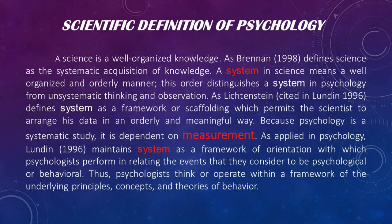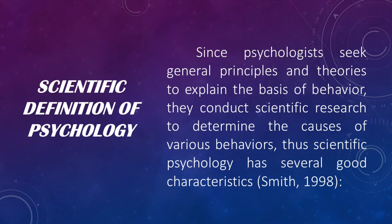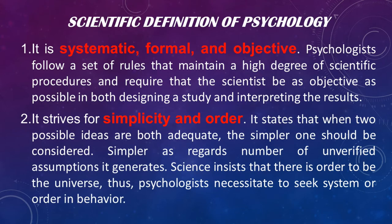The principles, concepts, and theories of behavior are based on the measurement of patterned behaviors. Because psychologists seek general principles and theories to explain the basis of behavior, they conduct scientific research to determine the causes of various behaviors. Thus, scientific psychology has several good characteristics. First, it is systematic, formal, and objective. Psychologists follow a set of rules to maintain a high degree of scientific procedure. In doing so, scientists become objective in designing a study and interpreting results — therefore the results should be factual and not opinionated.